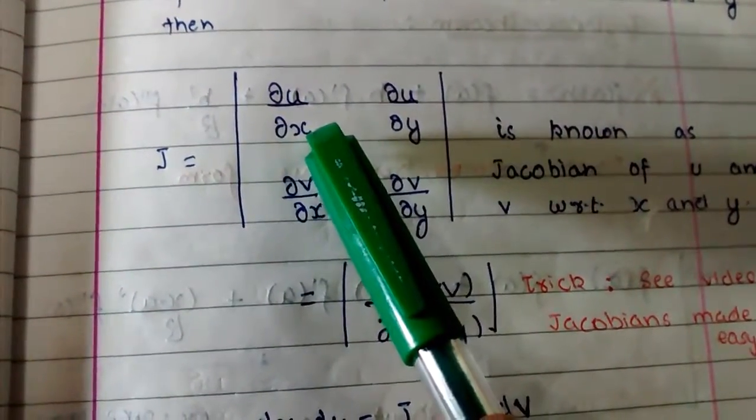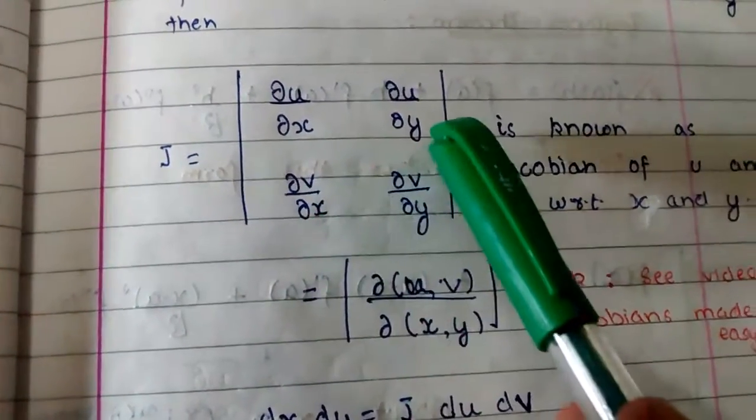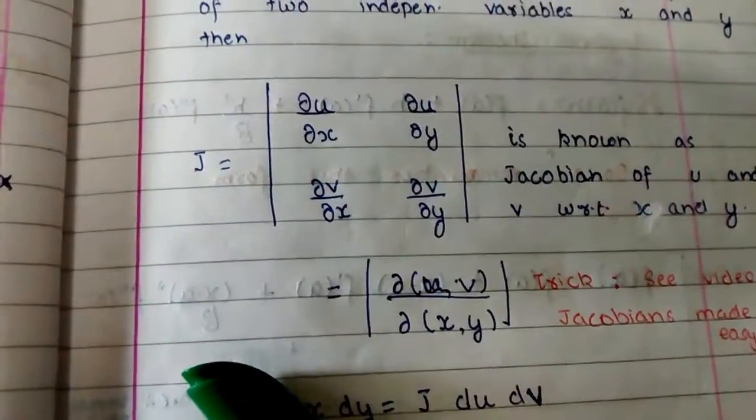You see that here we have x, again we have x here. We have y here and y here. It is the same along column. Thank you.